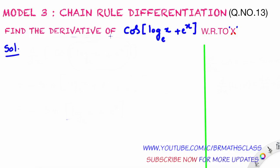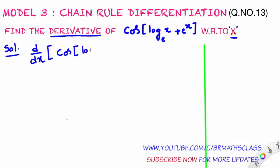Find the derivative of cos of log x base e plus e power x with respect to x. Derivative with respect to x — how we write it? We write it as d by dx. What does d by dx mean? Derivative with respect to x. Which expression's derivative do we need to find? Derivative of cos of log x base e plus e power x.